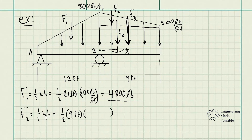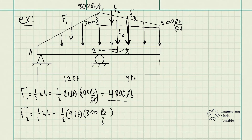For F2, again area equals one-half base times height. The base is 9 feet. However, you have to be careful about the height: the load ends at 500 lb/ft and the highest is 800 lb/ft, so the height of this triangle is only 800 − 500 = 300 pounds per foot. Using that height, F2 = (1/2) × 9 × 300 = 1350 pounds.